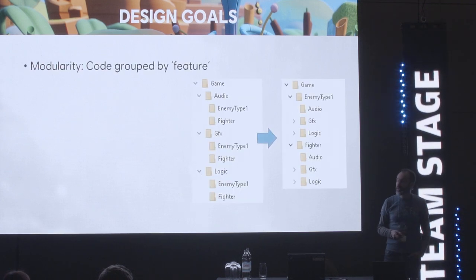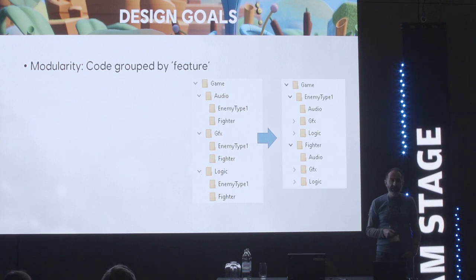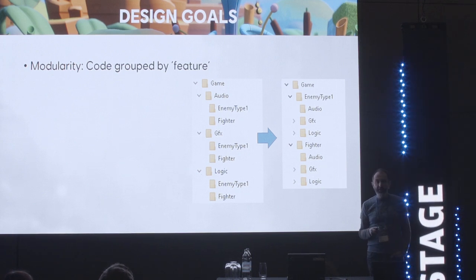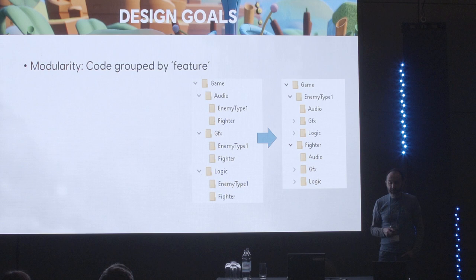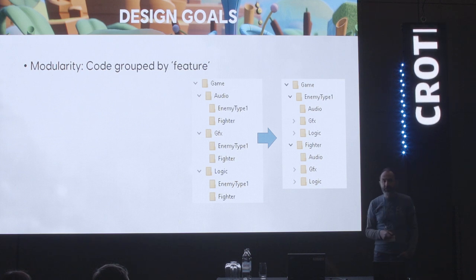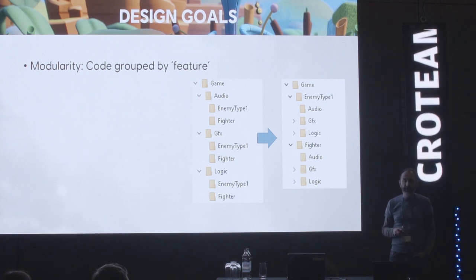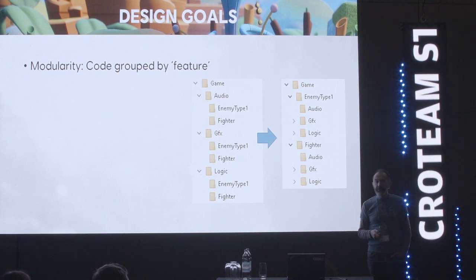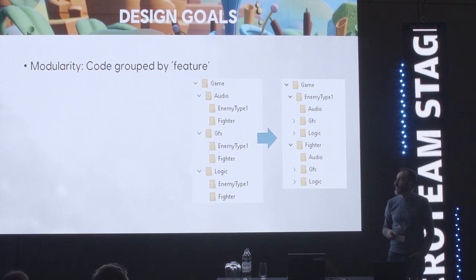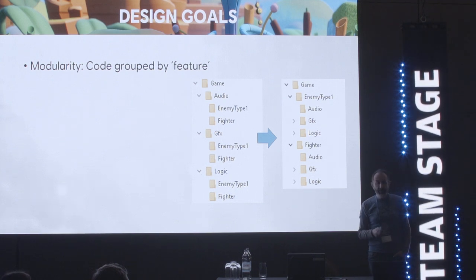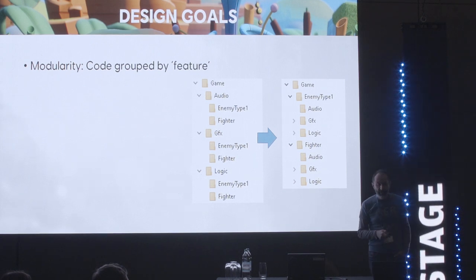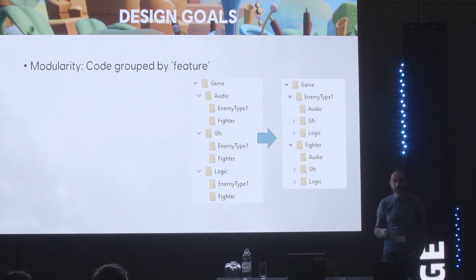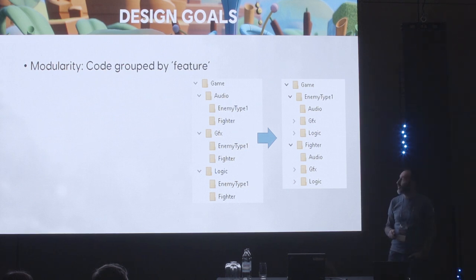The first thing we wanted to change is the way code is grouped. In the previous architecture, which was created semi-organically, the code of one feature — for example, an implementation of an enemy type — was scattered all over the code base, like audio files in an audio folder, graphic files in a graphic folder. So we wanted to achieve more modularity by feature. Ideally, if I don't need a feature, I should be able to remove it or at least disable it relatively easily. In the previous architecture, it was difficult even to say what one feature was, let alone removing whatever.